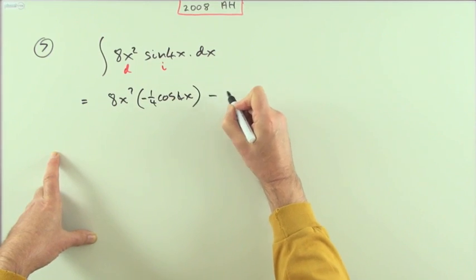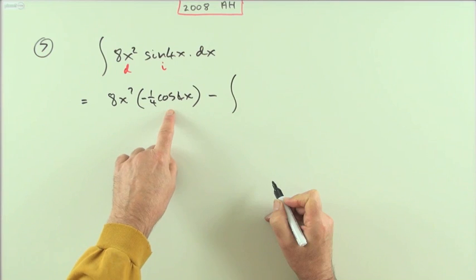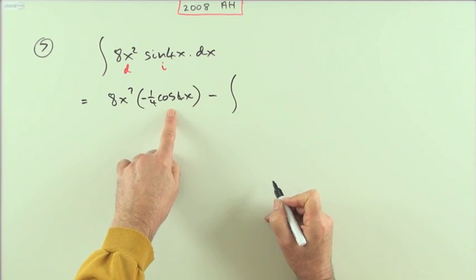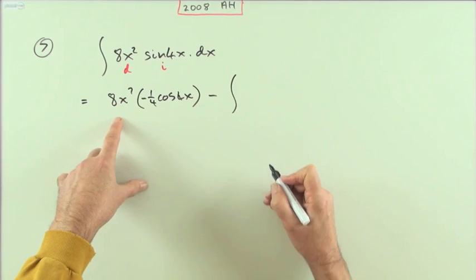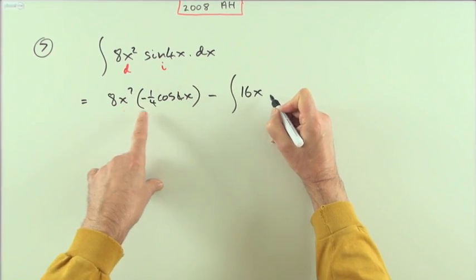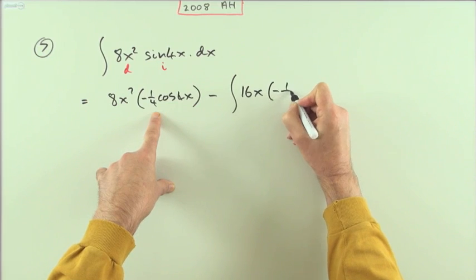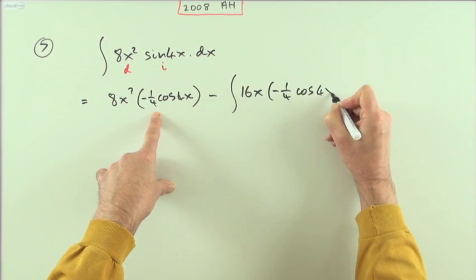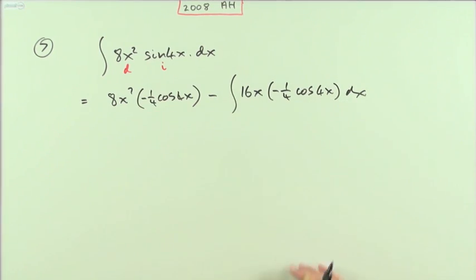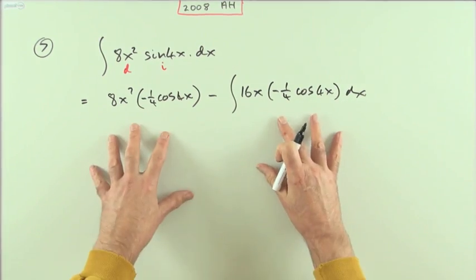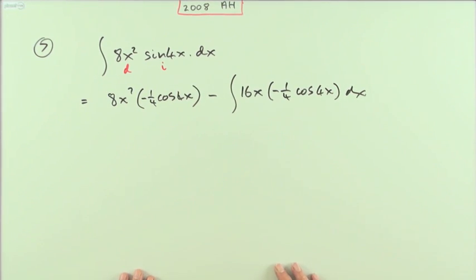x minus the integral of—now I've carried out the integration—so now differentiate. That goes down to 16x, and I've already done this one so it's left alone. So that's a quarter of cos 4x dx. That's the first part. I thought that'd be worth two out of the five marks for establishing that pattern.